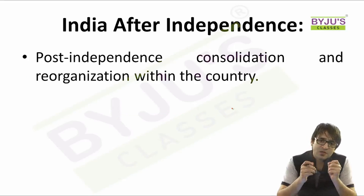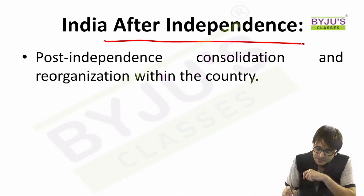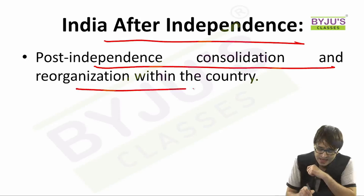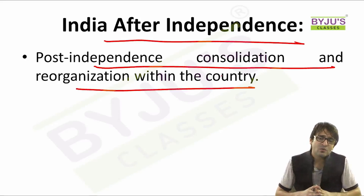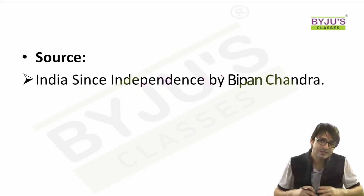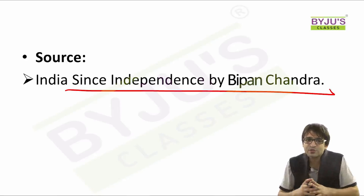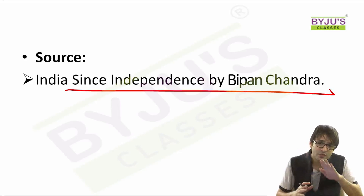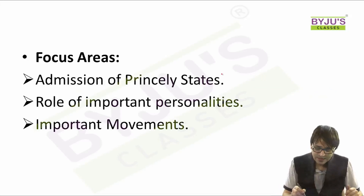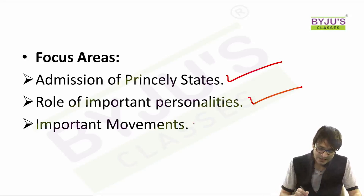After modern Indian history, another area in your history syllabus is India after independence. The syllabus covers post-independence consolidation and reorganization within the country. To master this area, one book shall be sufficient: India Since Independence by Bipin Chandra. There is also India After Gandhi by Ramachandra Guha, which is beautifully written, but from the civil services examination point of view, India Since Independence by Bipin Chandra is the bible you need to follow. The focus has to be on the admission of the princely states, role of important personalities, and important movements which took place after 1947.